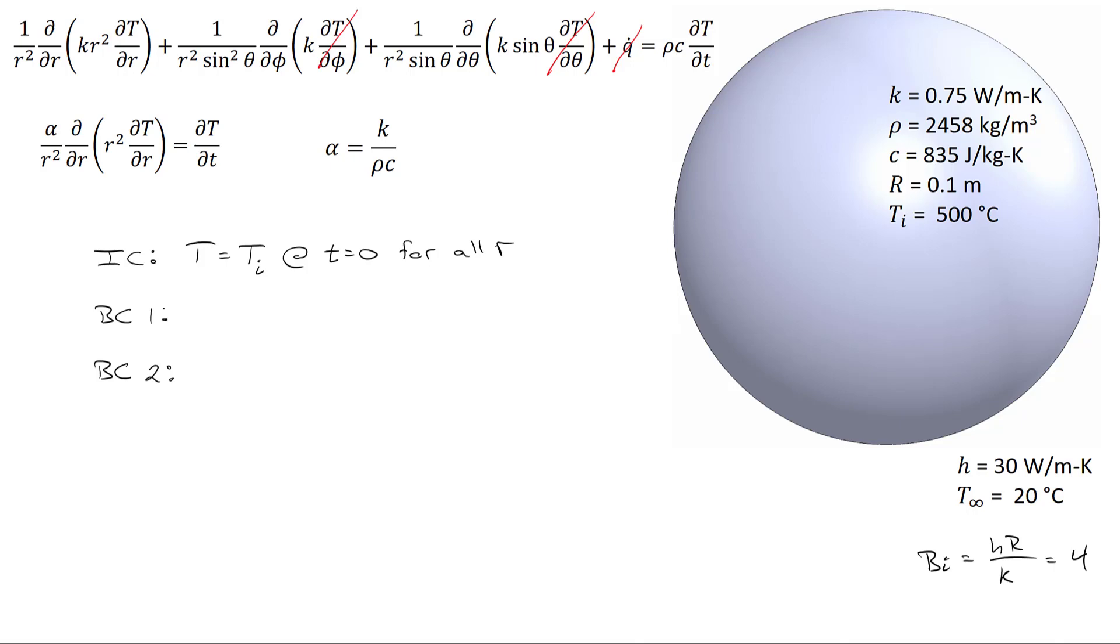The first boundary condition is a symmetry condition, and that says that the temperature gradient dT/dr has to equal zero at R equals zero, the center of the sphere, and this applies for all time.